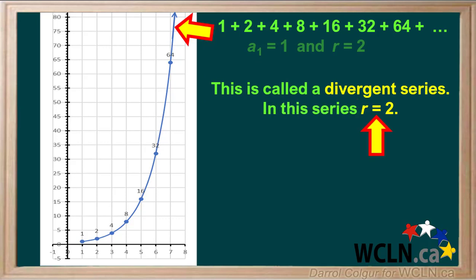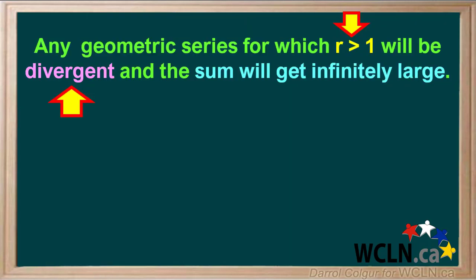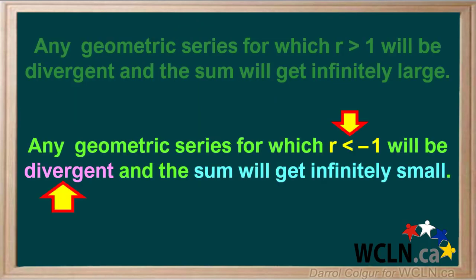In this series, R equals 2. In a divergent series like this, the sum of the terms will get infinitely large if the terms go on forever. Any geometric series for which R is greater than 1 will be divergent, and the sum will get infinitely large. It can also be shown that any geometric series for which R is less than negative 1 will also be divergent, and for these, the sum will get infinitely small.